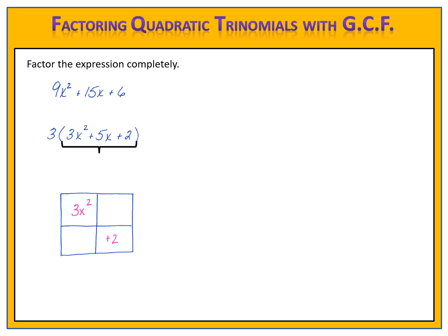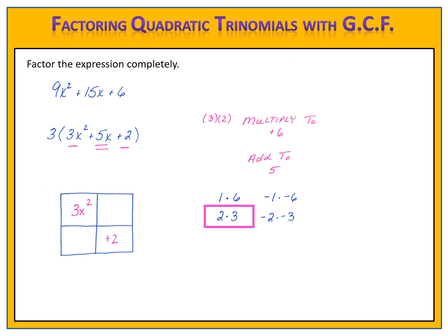We then need to find the numbers that fill in the rest of the positions in the grid. We take 3 times 2 and multiply them together to get 6. We need numbers that multiply to 6; the number in the middle is 5, so we need numbers that add to 5. Possible candidates that multiply to 6 are 1 times 6 and 2 times 3, along with their negative counterparts. Which pair adds to 5? 2 and 3. In the grid, we'll put 2x and 3x.